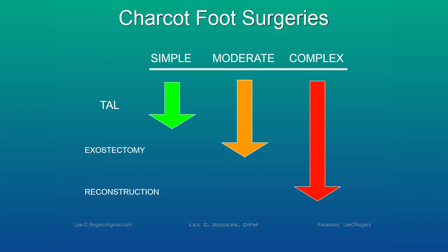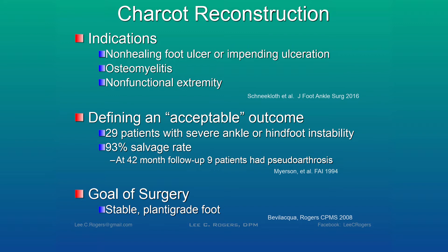On the surgical side, we can do something simple, moderate, or complex. The simplest is just addressing the Achilles tendon. Moderate is addressing the Achilles tendon and removing the exostosis. Complex is a complete reconstruction. Indications for Charcot foot reconstruction include a non-healing foot ulcer or impending ulceration. Osteomyelitis is actually an indication for surgery, not a contraindication — some people avoid operating because of osteomyelitis, but that's actually the reason to do the Charcot foot surgery: to remove the osteomyelitis. The goal is a stable plantigrade foot after surgery.